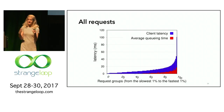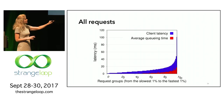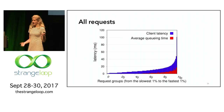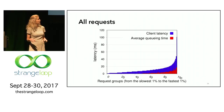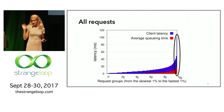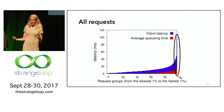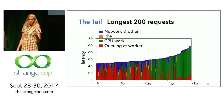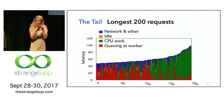Now we can take that cumulative distribution graph and present it differently: request groups from slowest to fastest on the x-axis and latency on the y-axis, with client latency versus average queuing time. Long requests have some queuing time and some work time. We take the 99th percentile requests and look at them in more detail, using the program counter to tell us what these requests were doing when they incurred the long latency.